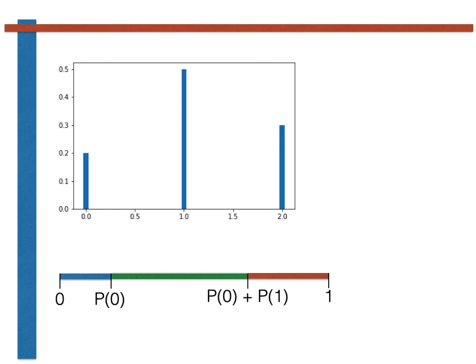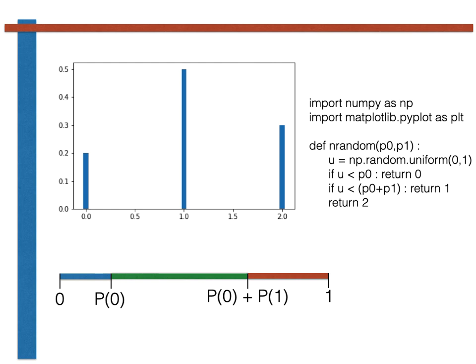As shown in the code on the right-hand side of the slide here, the value of the multinomial random variable is set equal to zero if the uniform random variable falls within the blue segment of the line. If the uniform random variable falls within the green segment of the line by contrast, the random variable is set equal to one. Lastly, if the uniform random variable falls into the red segment of the line, the multinomial trial is set equal to two.